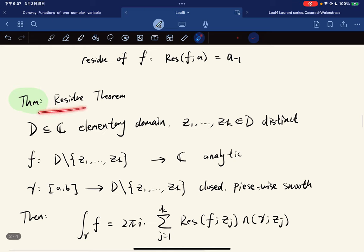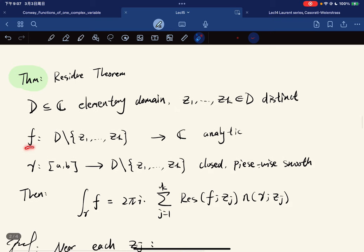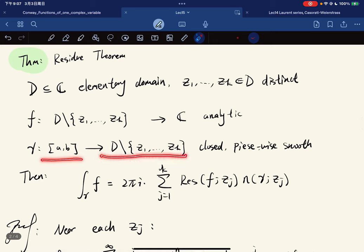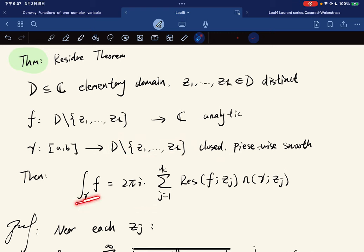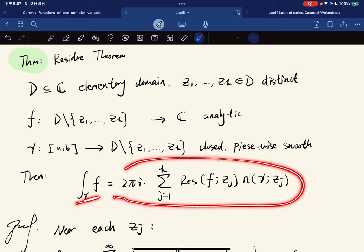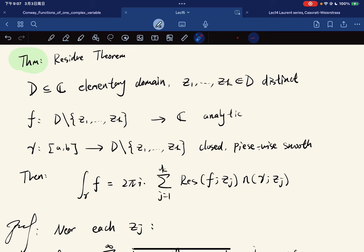Well, why is it so important? Because the residue theorem gives that for any elementary domain and finitely many distinct points such that f has those singularities, and gamma is a curve that does not pass through them, then we have this. So the integral of f, we have a formula which is equal to the sum of the residue times the winding numbers.